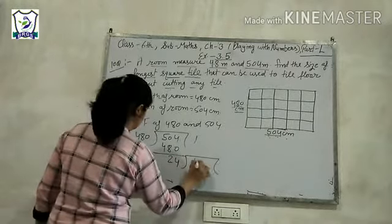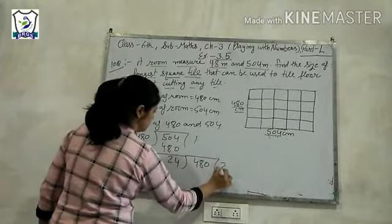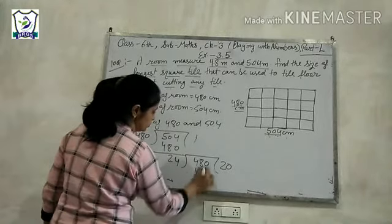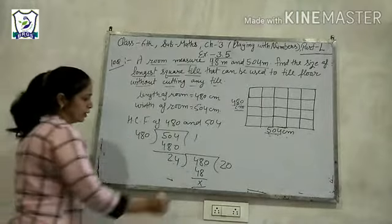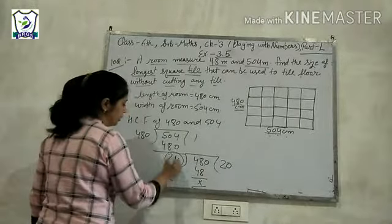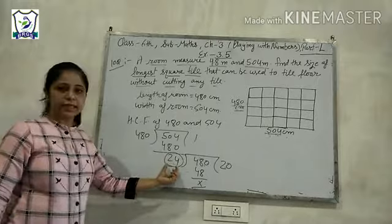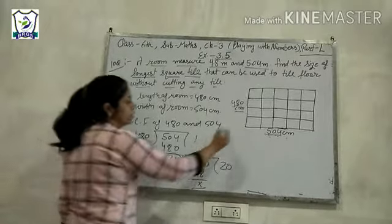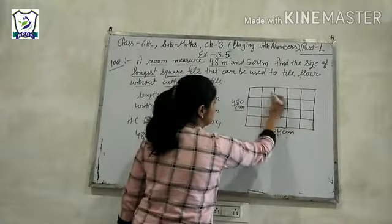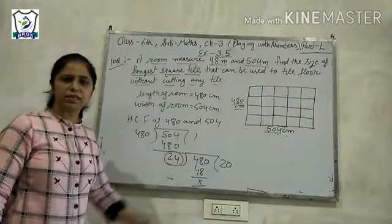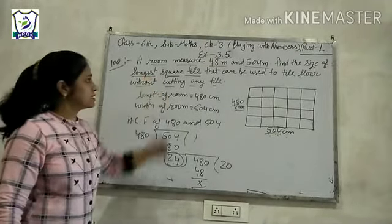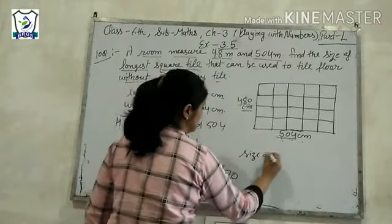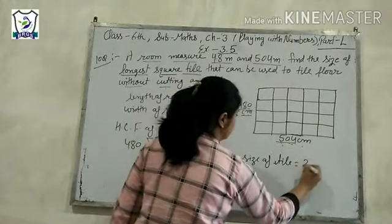480 divided by 2 gives 240, and this 0. It is completely divided by what? 24. The tile size, the size of the longest square tile, is equal to 24 cm.